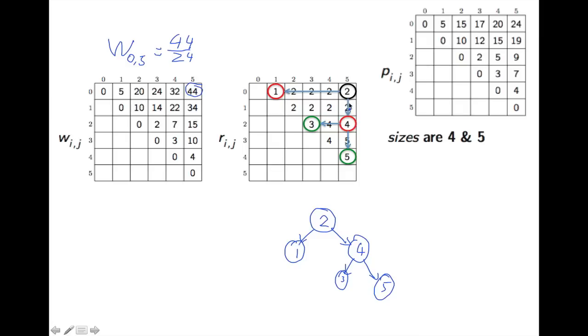So we just read out the tree from this table. By choosing 2, we know that we have the trees that we have 0 to 1, and then we have 2 to 5. So that basically tells us which are the two children of that tree.